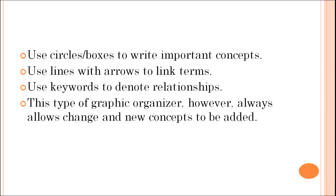Use circles and boxes to write important concepts — without boxes and circles, we cannot even visualize a concept map. Use lines with arrows to link terms; arrows show the direction. Use keywords to denote relationships, such as 'contributes to,' 'is in relation with,' or 'is the result of.' Such keywords are very essential because without them we are not able to understand what the concept map is trying to tell us. This type of graphic organizer always allows changes and new concepts to be added.